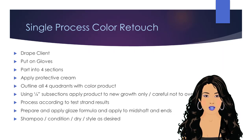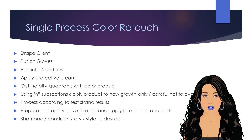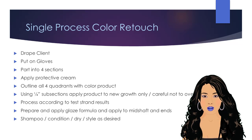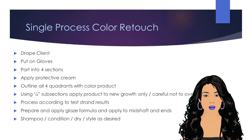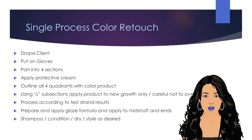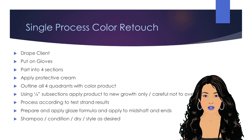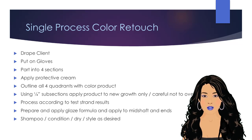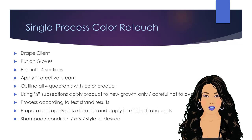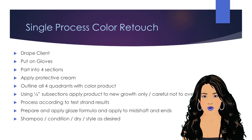The process of applying the same color formulation to a client's hair that has grown out and faded is known as a single process color retouch. To perform this service, drape the client for a chemical service. Put on gloves. Part the hair into four uniform sections and apply protective cream around the hairline. Outline all four quadrants with the color product. Use ¼ inch subsections and apply the product to the new growth only, being careful not to overlap the line of demarcation, or the line that delineates where color was applied during the last color service.